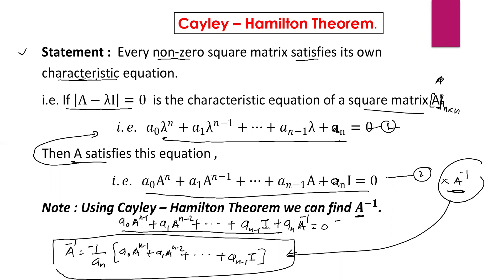Using the Cayley-Hamilton theorem, we can find A inverse. For that, we multiply equation 2 throughout by A inverse. When we simplify, we get A inverse equal to minus 1 upon A_n, in bracket: A₀·A^(n-1) plus A₁·A^(n-2) plus dot dot plus A_(n-1)·I.